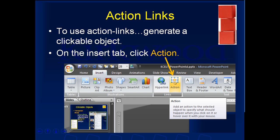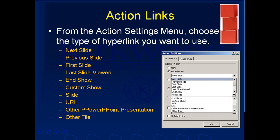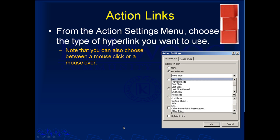To use action links, you again need a clickable object. On the Insert tab, click Action after you've selected the clickable object. From the Action Settings menu, you can choose a variety of hyperlinks — confusingly named — including: next slide, previous slide, first slide, last slide, end the show, custom show, or any slide in your PowerPoint. That's how I created my indexes using clear circles that jump to various slides. You can also enter URLs, other PowerPoint presentations, or other files. Note that you can also select whether you need to click the object or just hover the mouse over it.